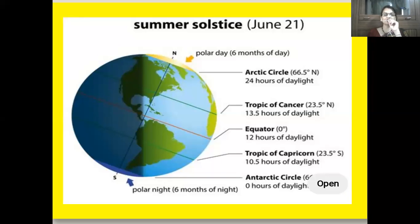The region between the Arctic Circle and the North Pole receives sunlight 24 hours a day, and for a few months the sun never sets there. On June 21st, the northern half of the Earth is inclined towards the sun and the southern half is away from the sun. More of the Northern Hemisphere is exposed to the sun compared to the Southern Hemisphere. The days are longer and nights are shorter north of the equator, making the Northern Hemisphere extremely hot. At the same time in the Southern Hemisphere, it is winter season — nights are longer and days are shorter.